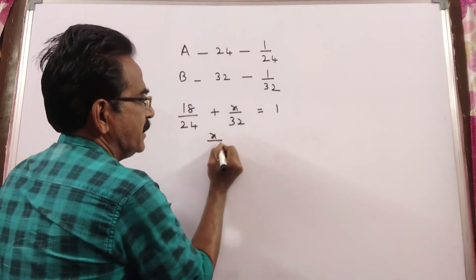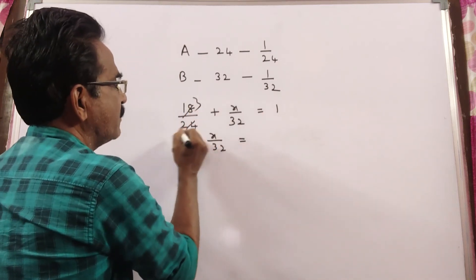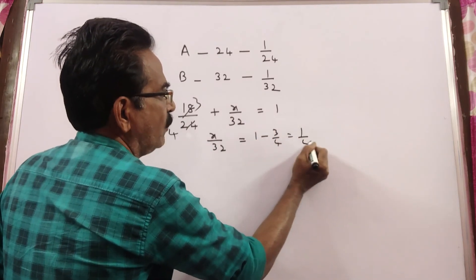So, X by 32 is equal to 6 3's, 6 4's, 1 minus 3 by 4, that is equal to 1 by 4.